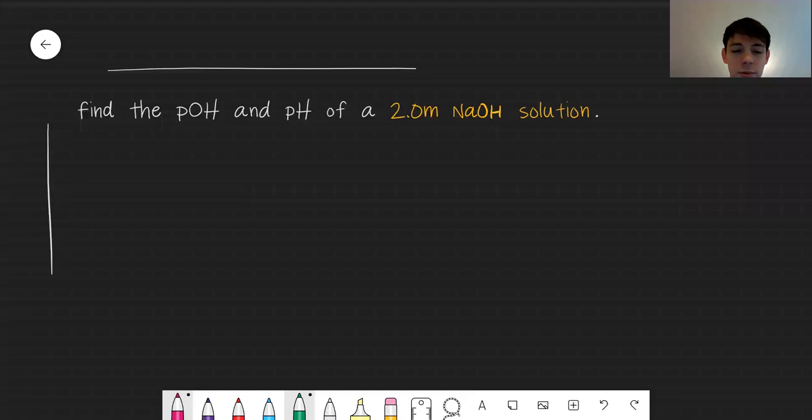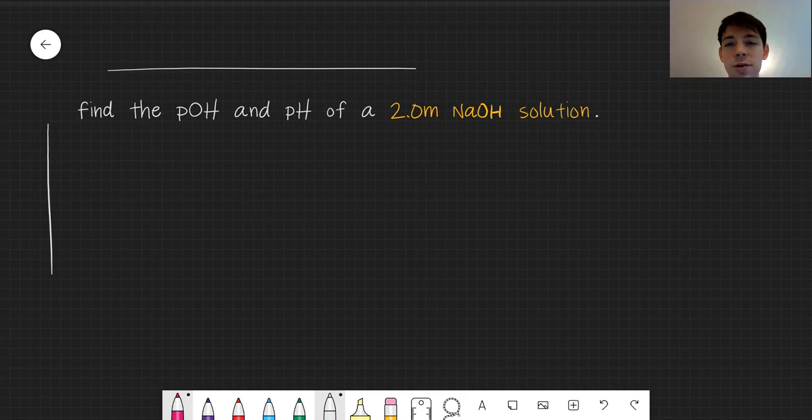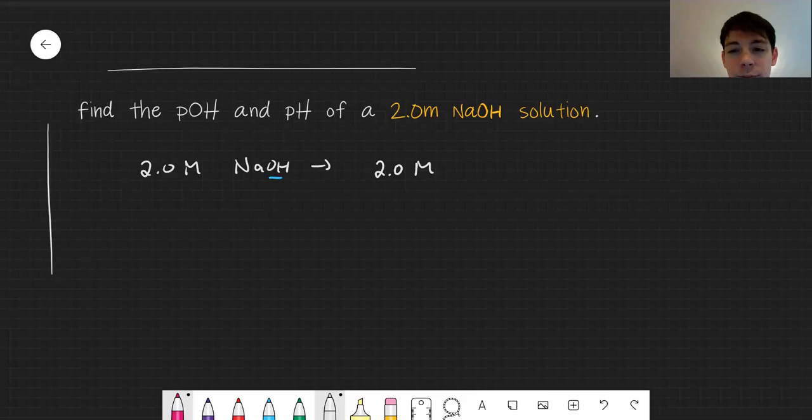I'm going to keep the expressions hidden. I encourage you to try this one on your own before I jump into it. Let's find the pOH and pH of a two molar NaOH solution. We've got two molar NaOH. This is a base that contains one mole of hydroxide, so this is going to be also two molar OH minus.